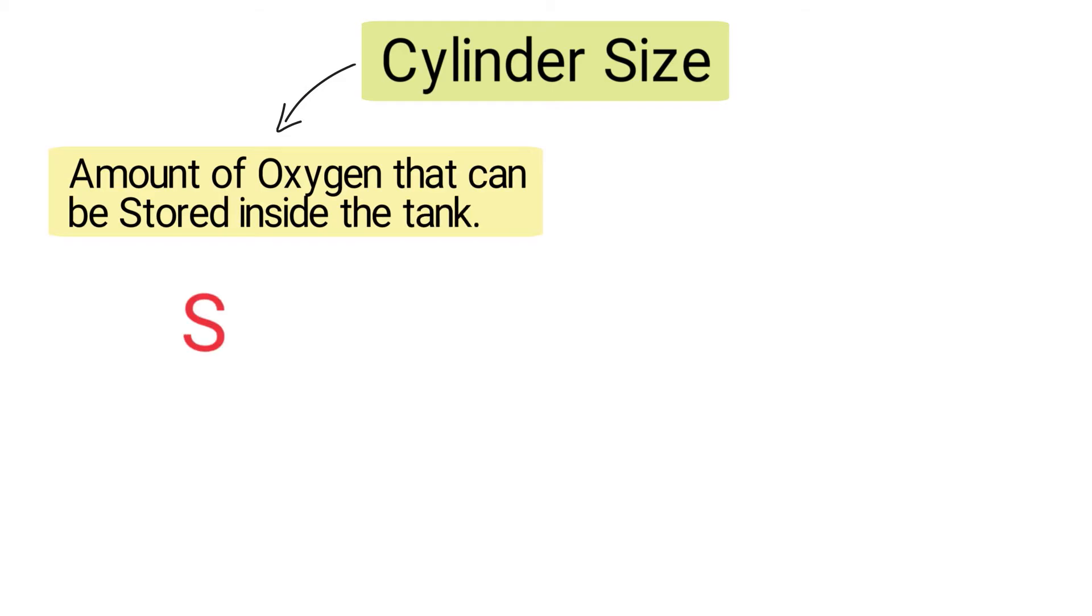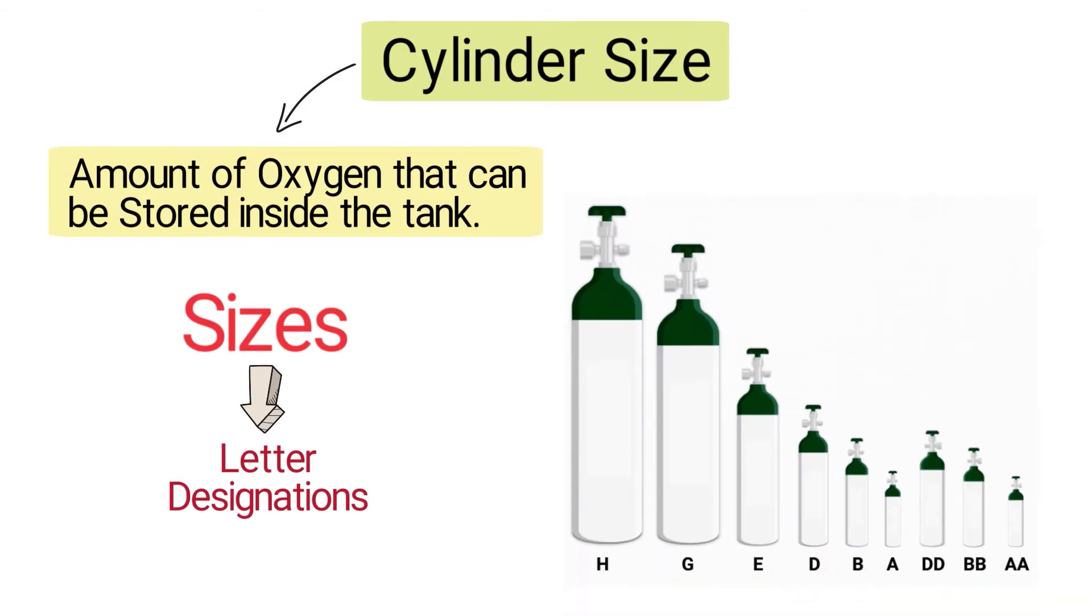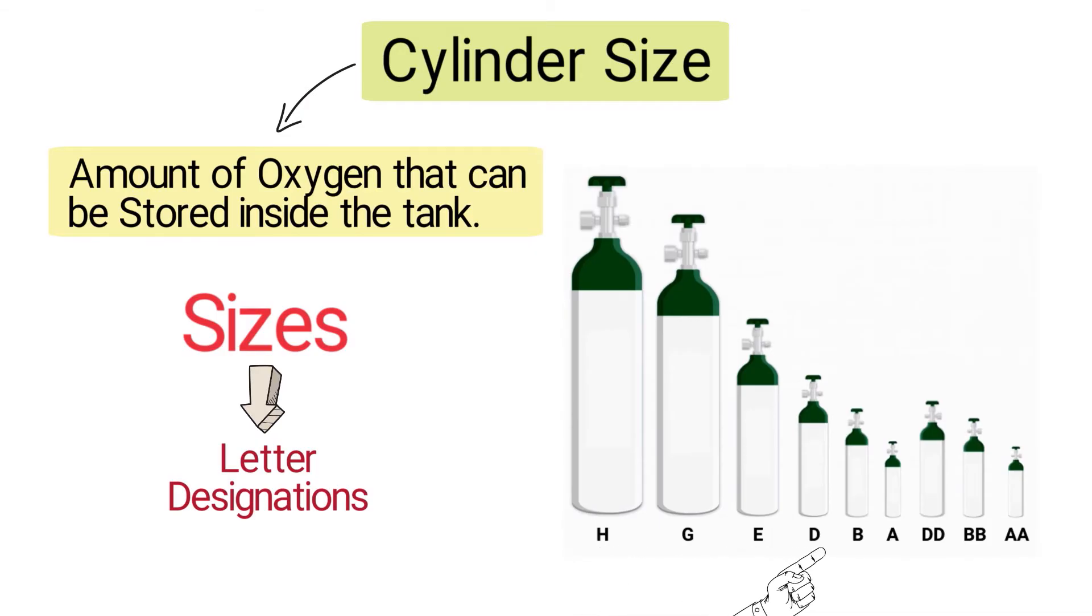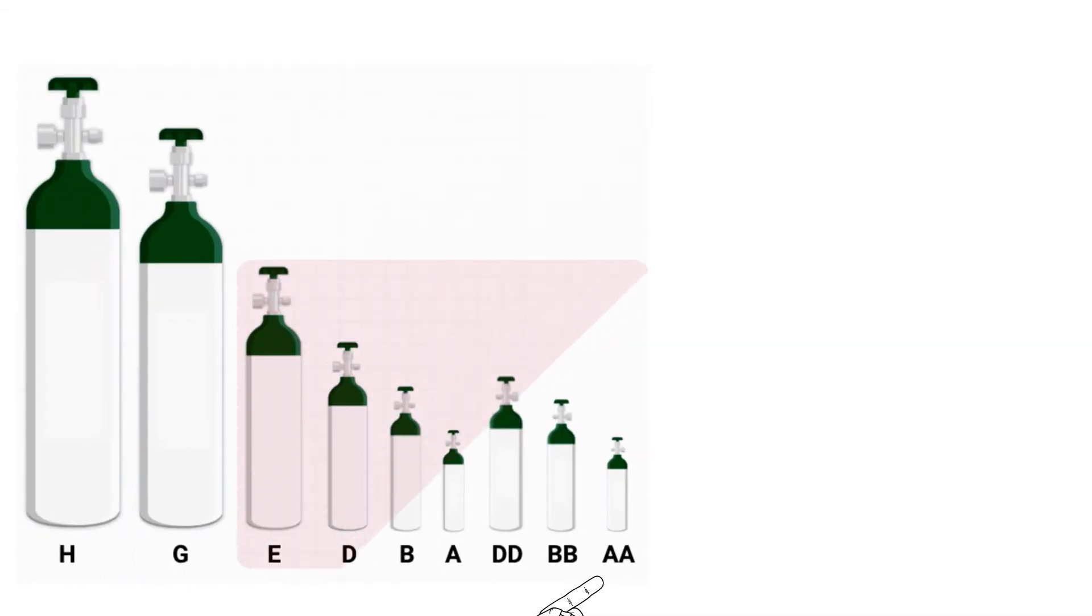First, we have the cylinder size. As just mentioned, the size of the cylinder dictates the amount of oxygen that can be stored inside of the tank. The sizes are identified by letter designations including the following: H, G, E, D, B, A, double D, double B, and double A.